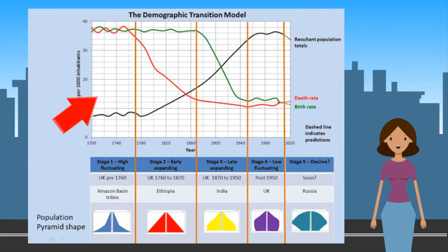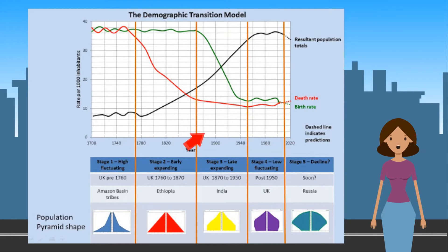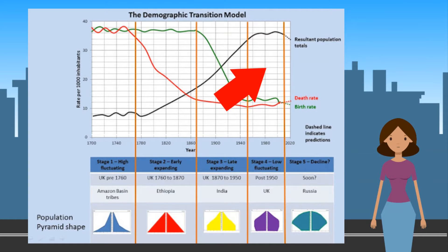In stage two, with economic development, living conditions and medical technology improve, but while death rates fall, birth rates remain high. In stage three, in response to rising prosperity, the birth rate begins to decline; even so, the gap between births and deaths remains large and the population continues to increase. In stage four, birth rates fall to the same low level as death rates — the demographic transition is complete and population growth ends. There is a hypothetical stage five on the diagram, but it is only speculation what will happen at this stage.